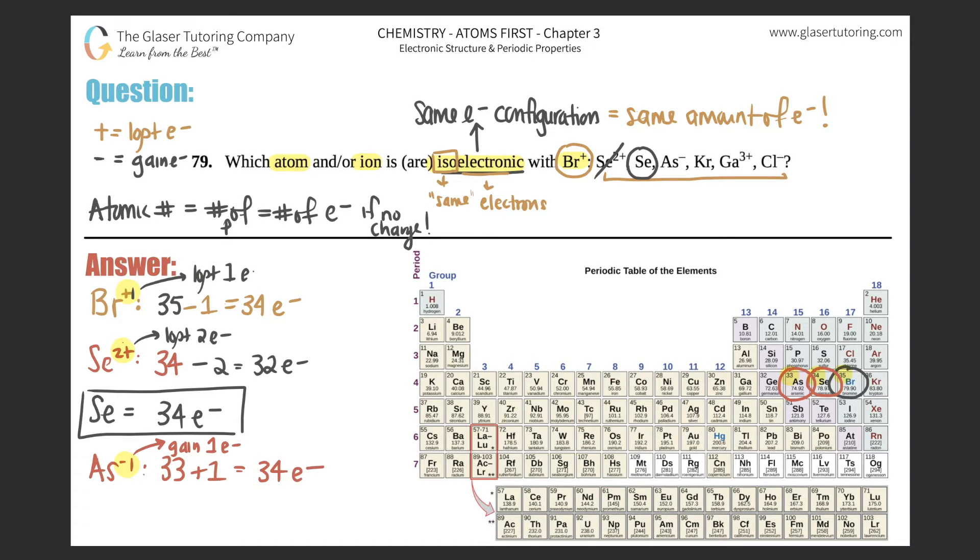That's isoelectronic with what we want because Br+ has 34 electrons. So As- is also another ion that's isoelectronic with Br+. So circle that one.